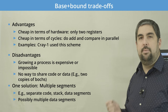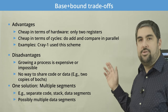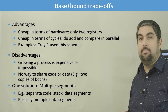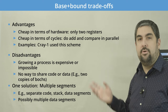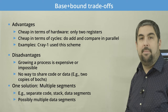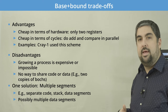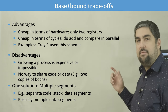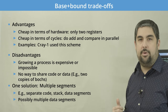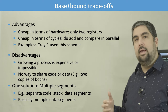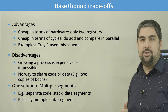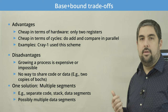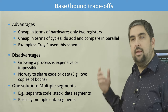Trade-offs of the base and bound approach: advantages include requiring only two registers and a very cheap add-and-compare operation. It's been used in real hardware — the Cray-1 essentially used this approach. Disadvantages: growing applications is expensive or sometimes impossible since we need a single contiguous chunk; and there's no way to share code. More sophisticated virtual memory can allow sharing — for example, libc used by virtually every application could be shared between all applications if the code is read-only, reducing memory use and improving cache efficiency.